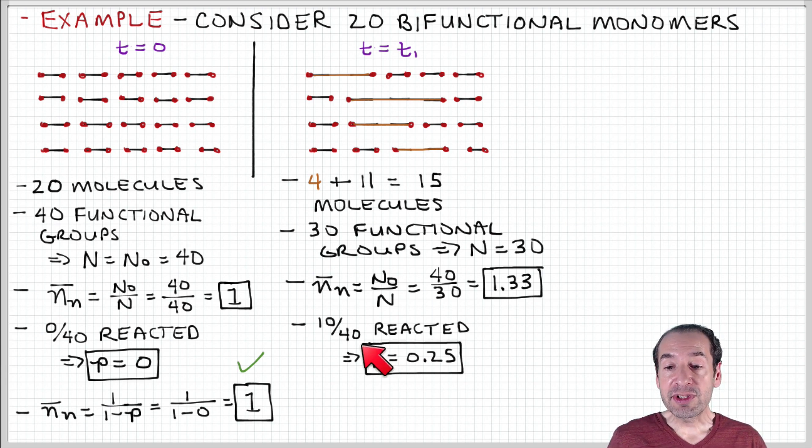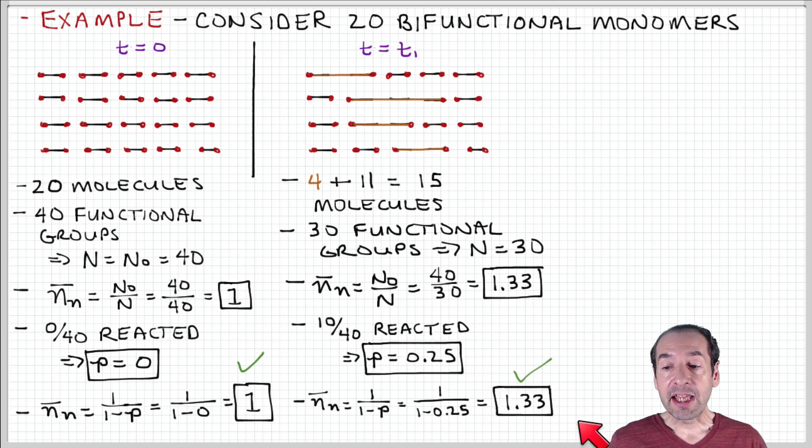We can also notice that 10 out of 40 of these functional groups have reacted. You can count those here by basically counting the red dots that have disappeared as a result of this process. So 10 of these functional groups out of 40 have reacted, and that corresponds to a value of the extent of reaction of 0.25. Then we can substitute into the Carruthers equation, 1 over 1 minus P, and we find that we get the same result, 1.33.